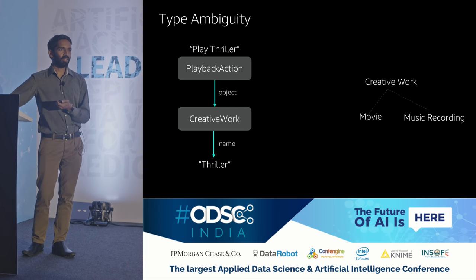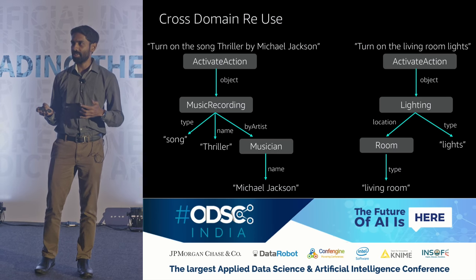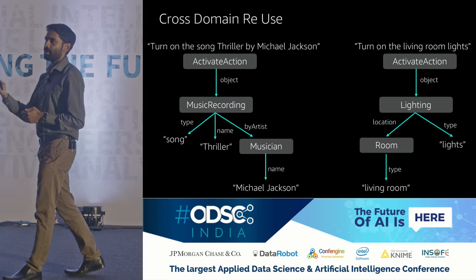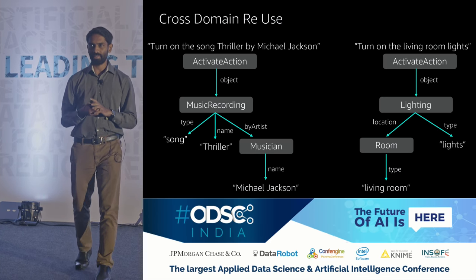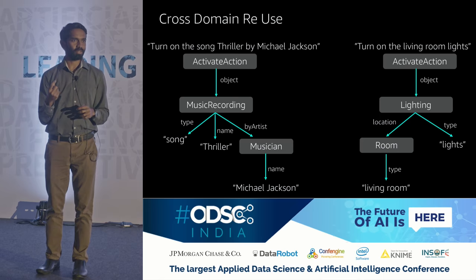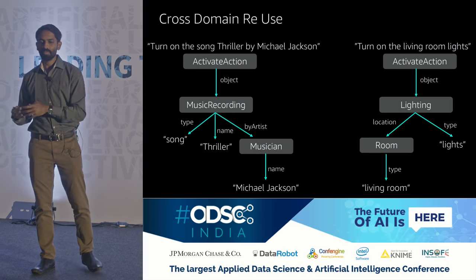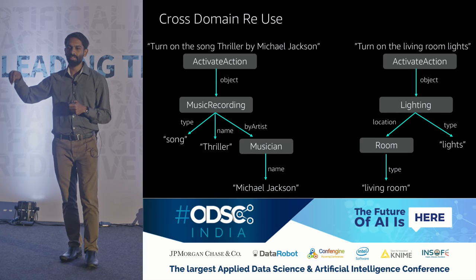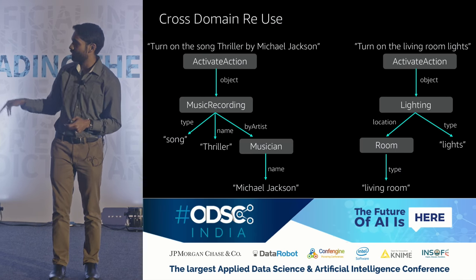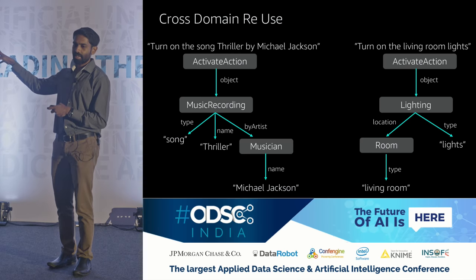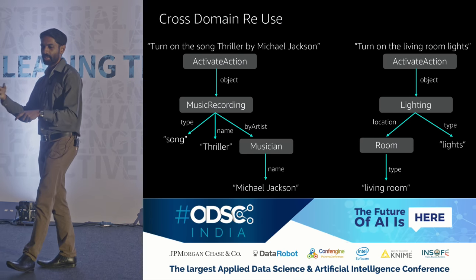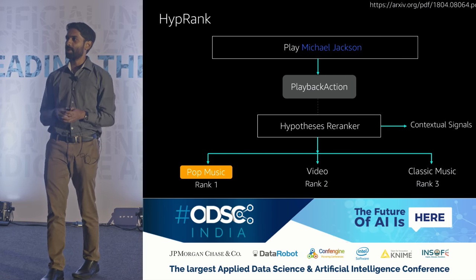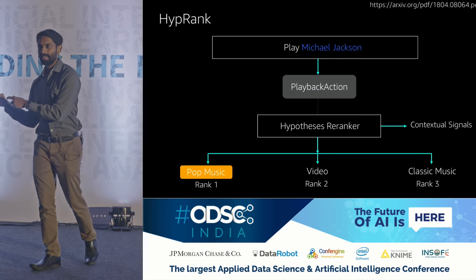The AMRL can also be reused across domains. Consider 'turn on the song Thriller by Michael Jackson' versus 'turn on the living room lights.' Both start with 'turn on,' so both use an activate action — they just take arguments that are different objects. In the first example, the object is music recording (with the song name and artist). In the second case, the object is lighting (with the room and light type). So you have a way to represent what the user said, using a shared action across two different domains.